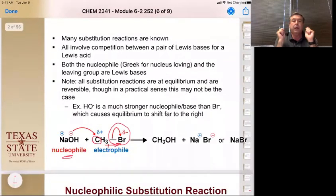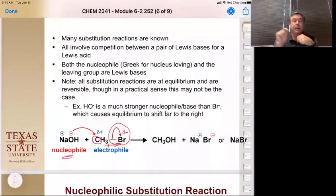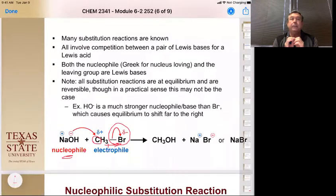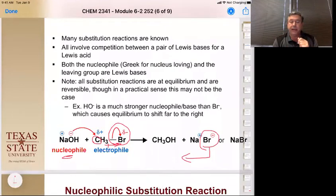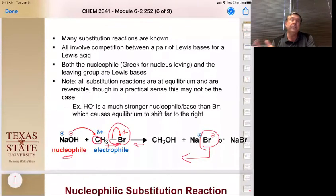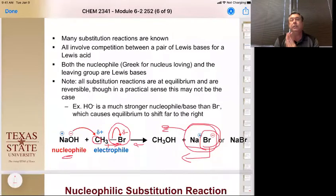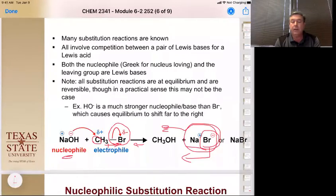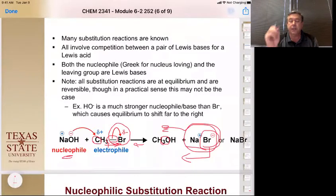We always need to have the leaving group be a less strong base or a more stable ion than the attacking group. Almost all of these substitution reactions are in equilibrium because the leaving group — now with a negative charge — can act as a nucleophile pushing the reaction back. But in most cases they tend to go mostly to the product we want. In this case, the carbon-oxygen bond is more stable than that carbon-bromine bond — it has more bond dissociation energy.